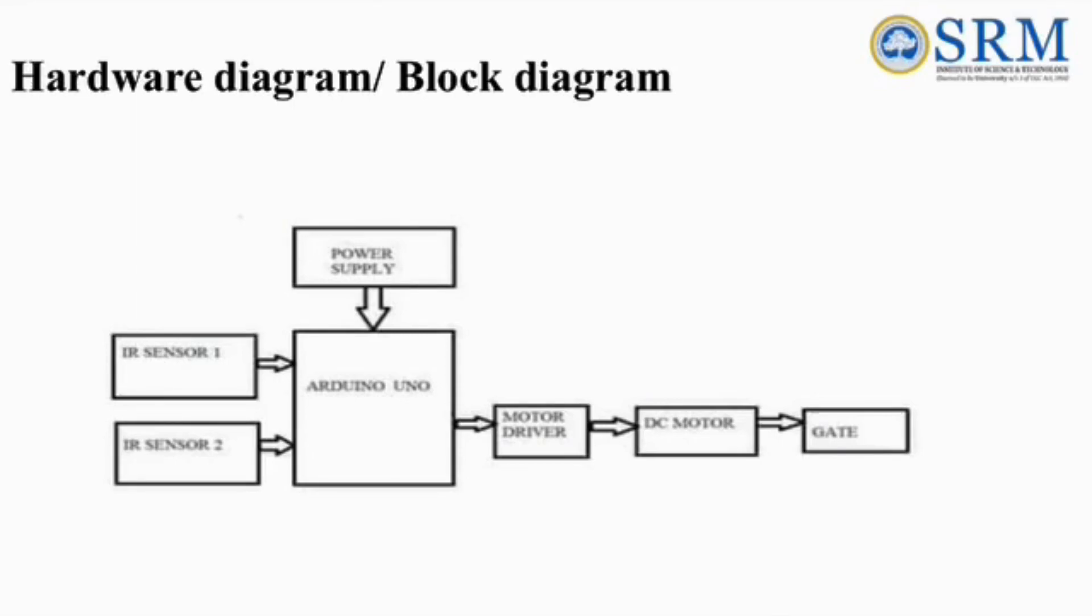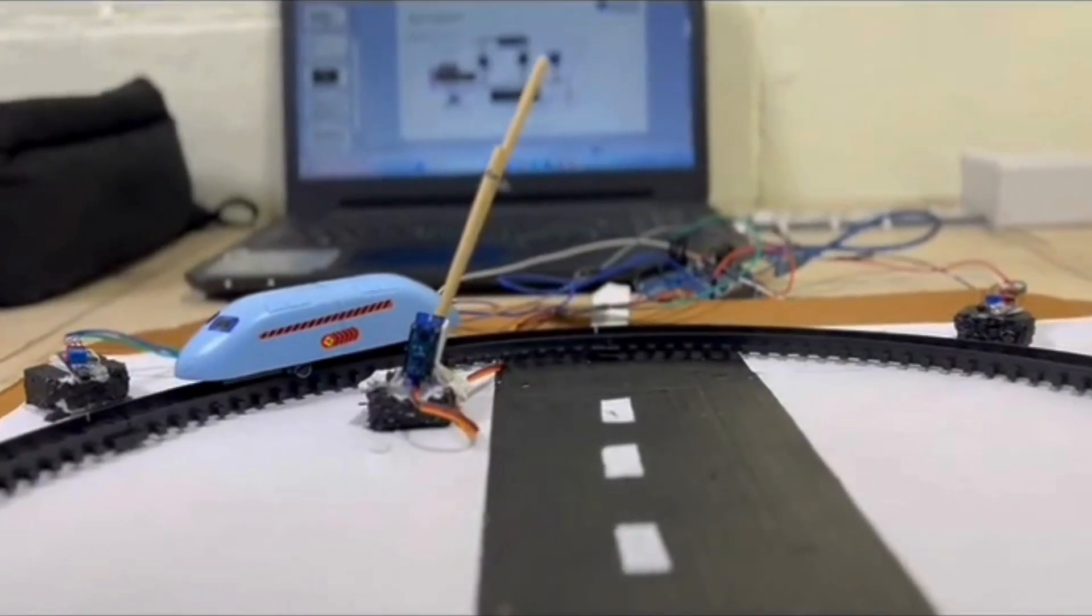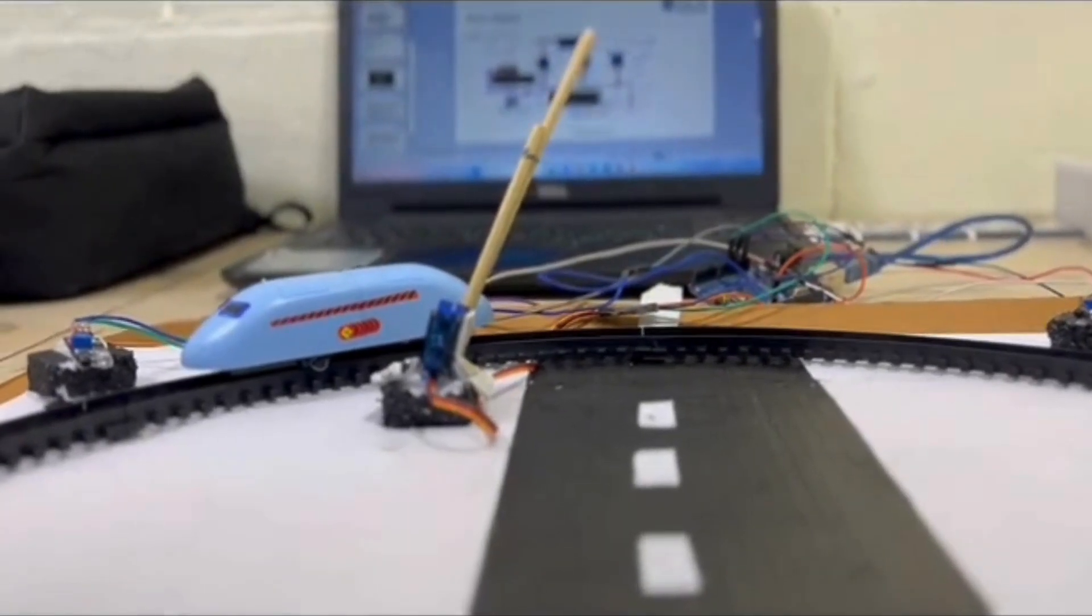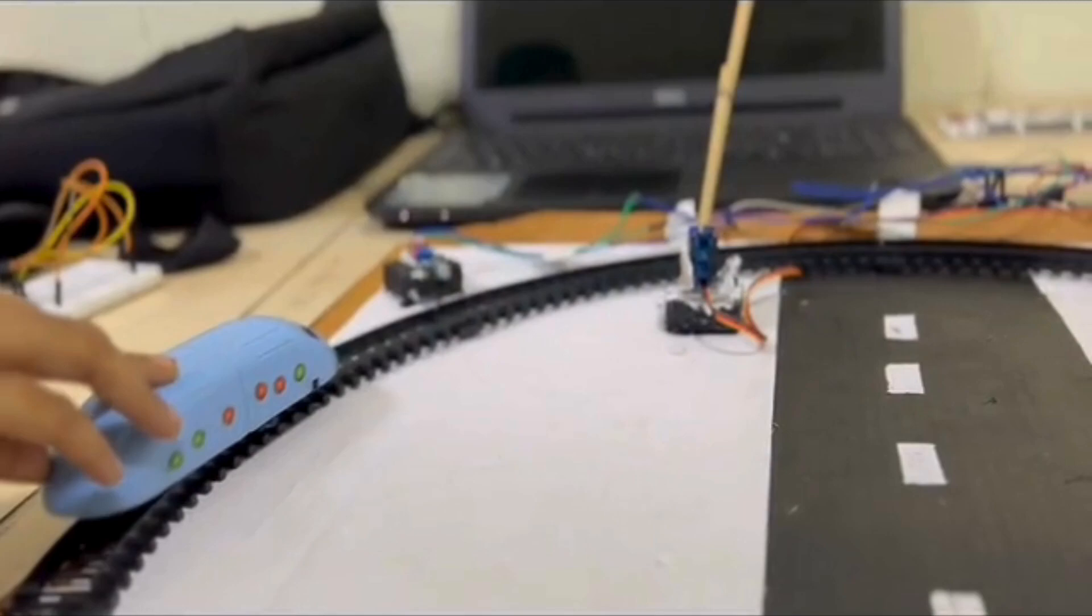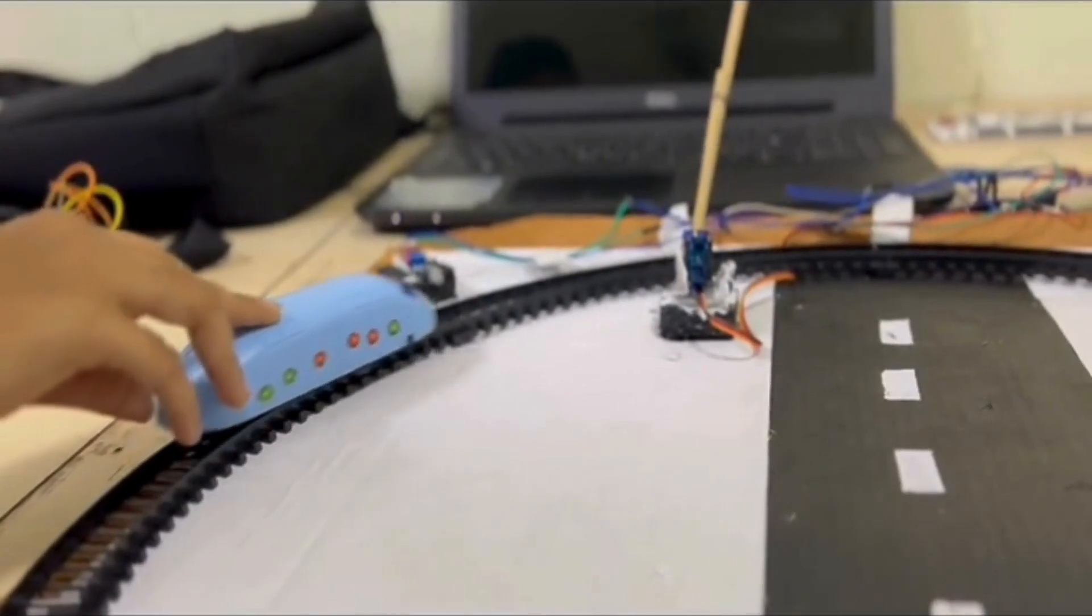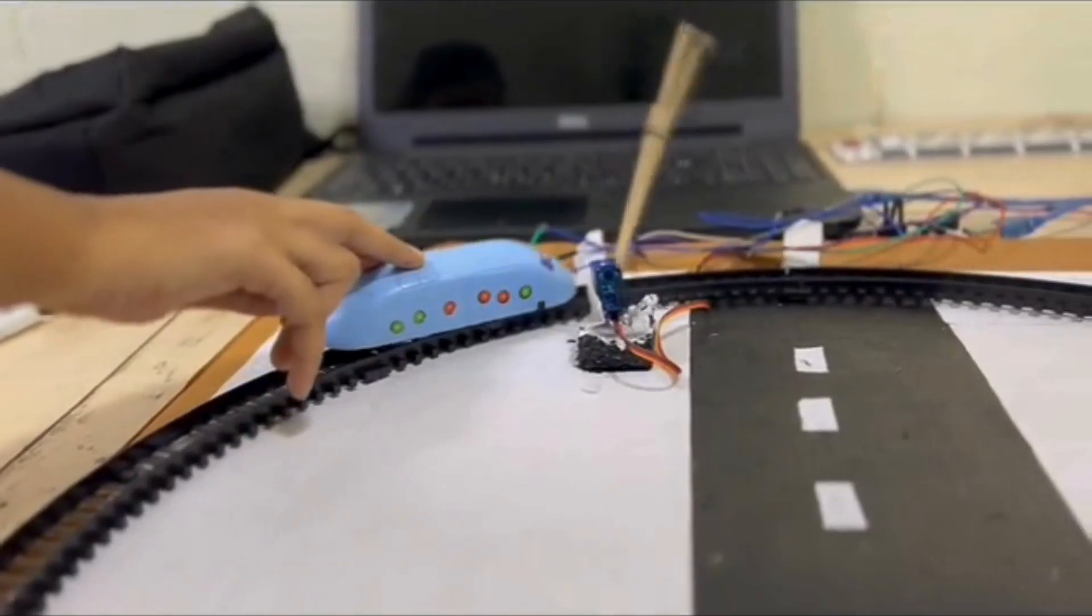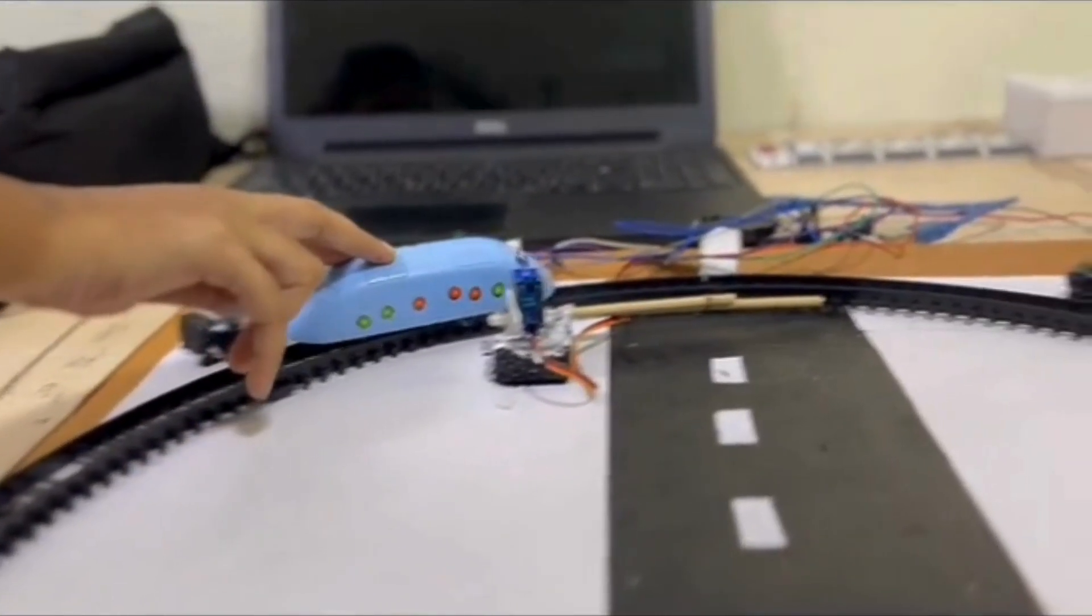These systems utilize sensors to detect approaching trains. When a train is detected, the gate automatically closes to prevent vehicles and pedestrians from crossing the tracks. The gate remains closed until the train passes and the sensor confirms that it has cleared the area. Once the train has passed, the gate opens again to allow traffic to resume.